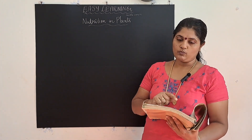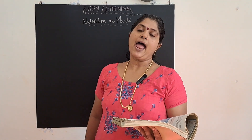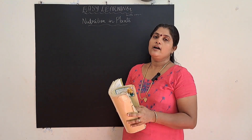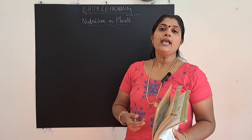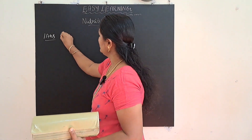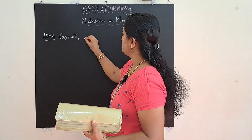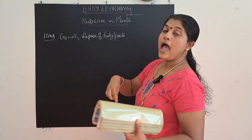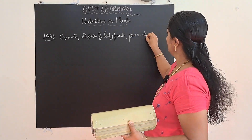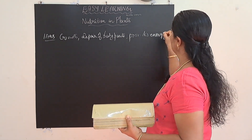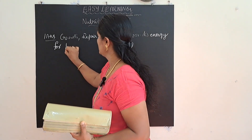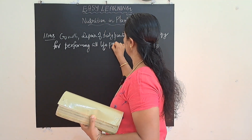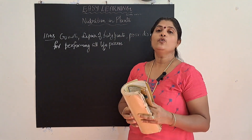In the exercises given in the textbook, I will first read the questions and then explain the answer. The first question is: why do organisms need to take food? Organisms need food mainly for growth, repair of their body parts, and it provides energy for performing all the life processes.